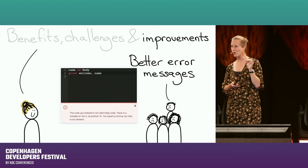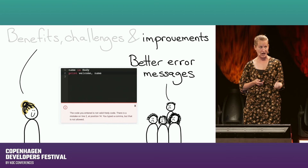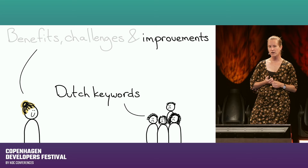Now we have a newer user interface where all symbols are vocalized as words — 'comma,' 'question mark,' 'semicolon.' Kids tend to skip over those characters because they're not trained in reading them. That was a tiny but impactful improvement we made.